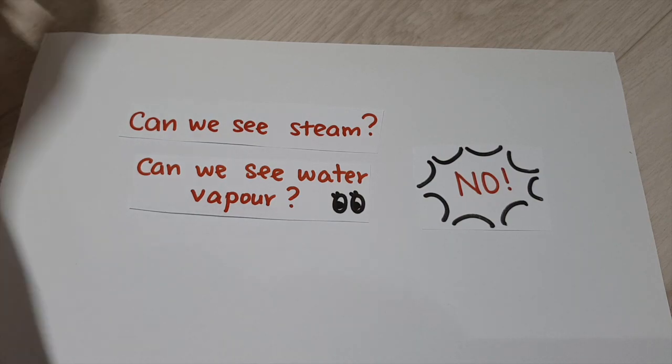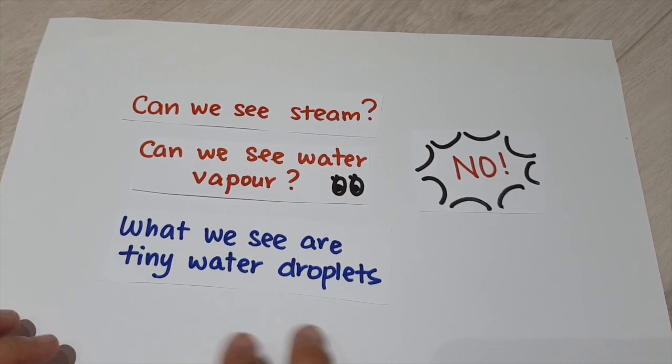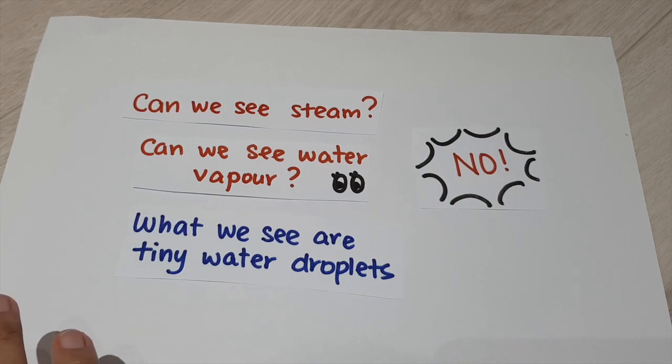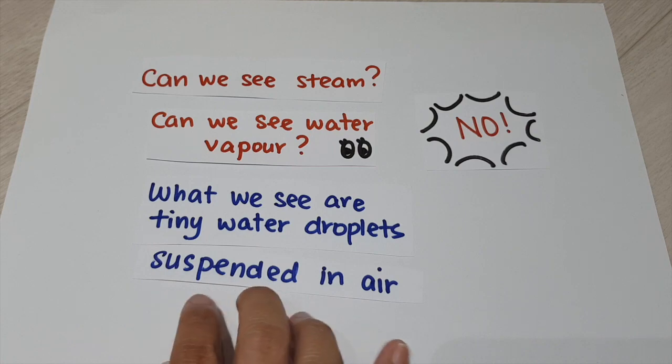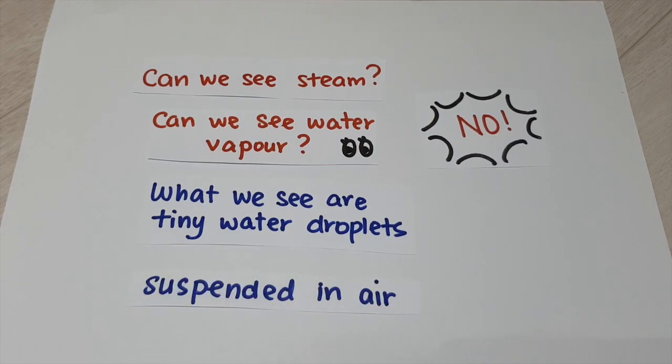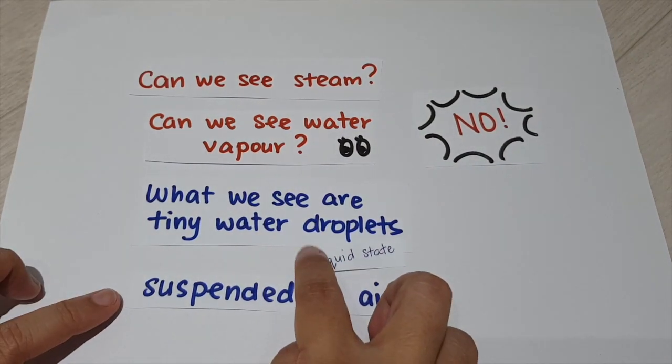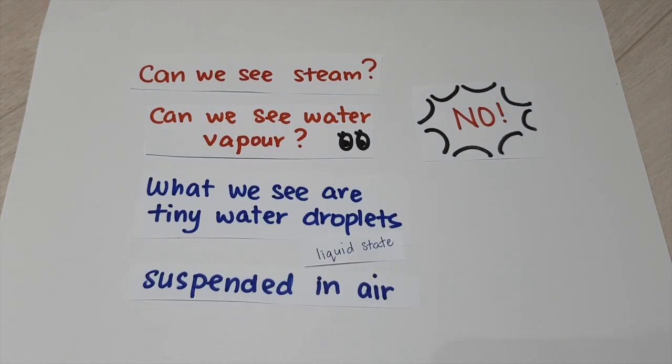So what we see are tiny water droplets. When you see water boiling, you see tiny water droplets that are actually suspended in air. So these tiny water droplets, they are actually in liquid state. It's basically water in liquid state, just that they are so tiny, so these tiny water droplets can suspend in air.